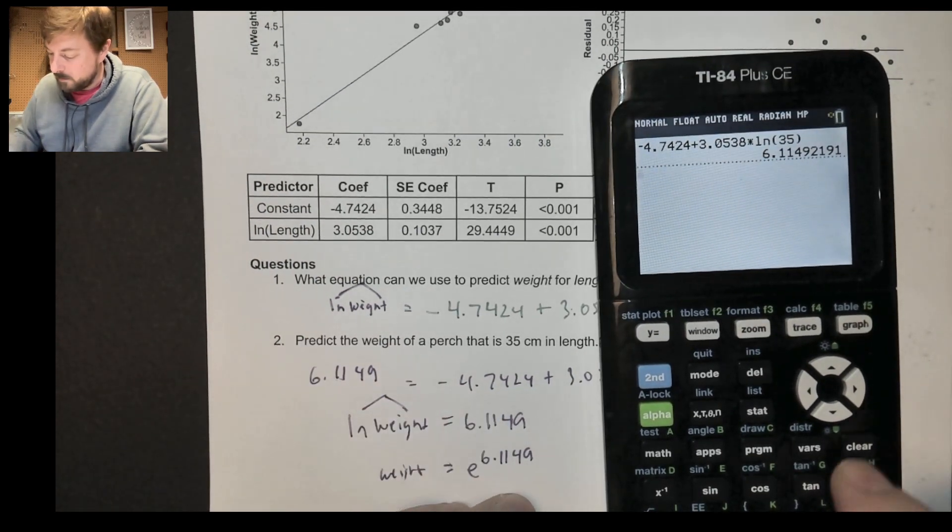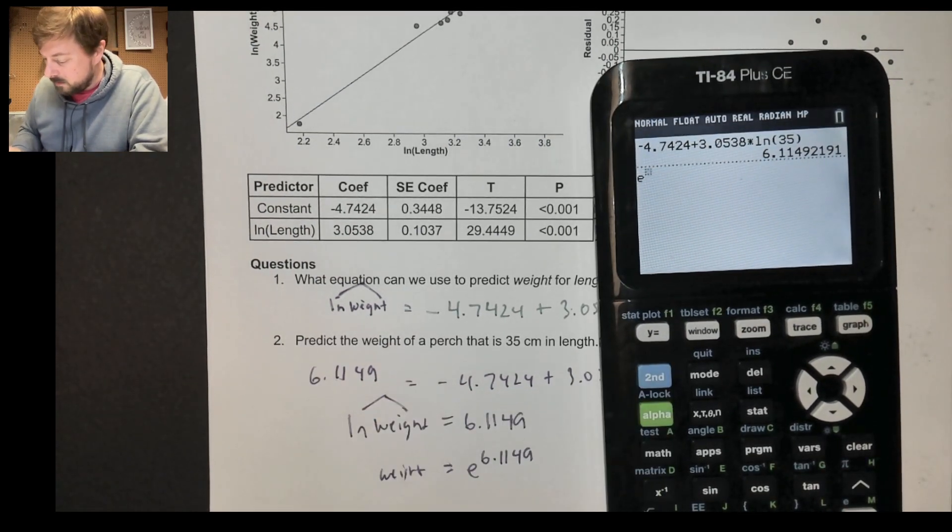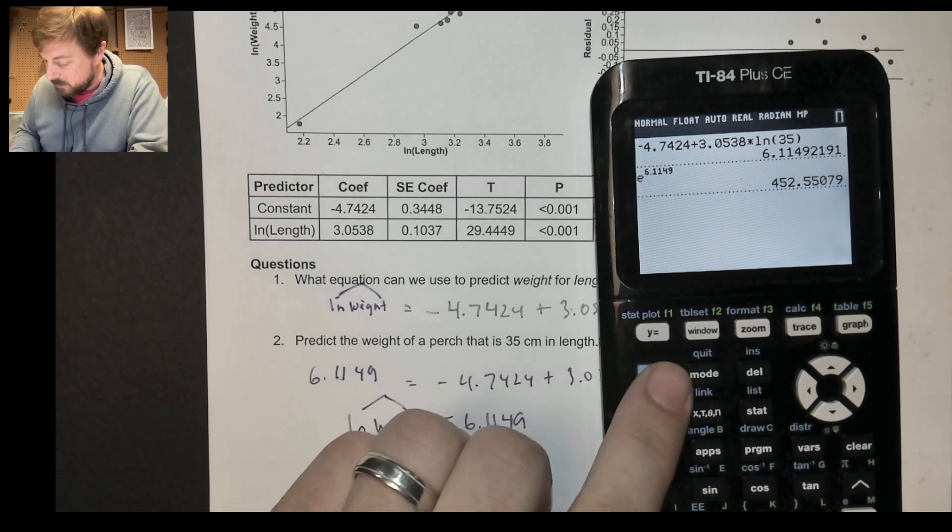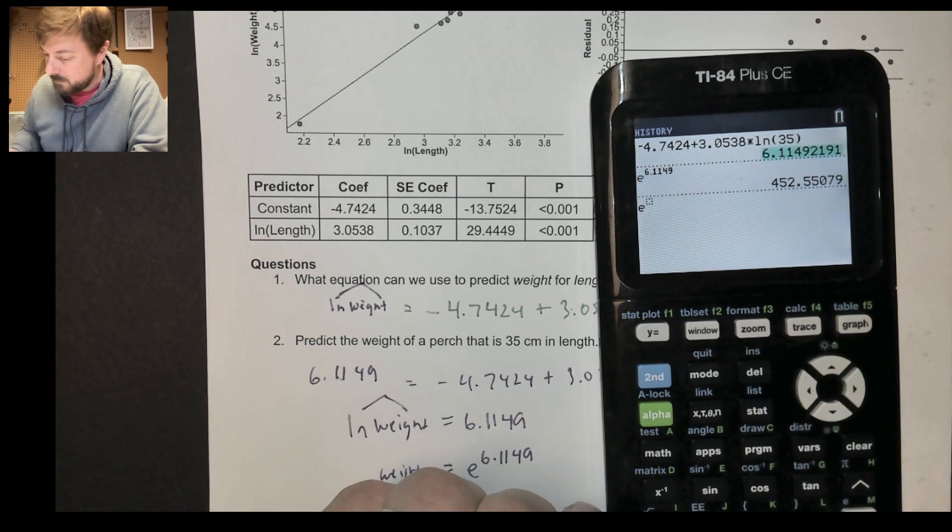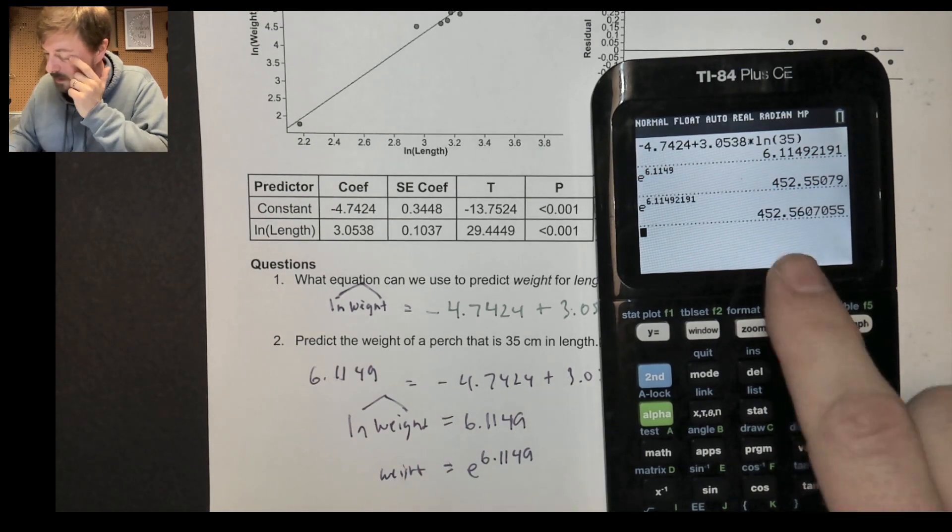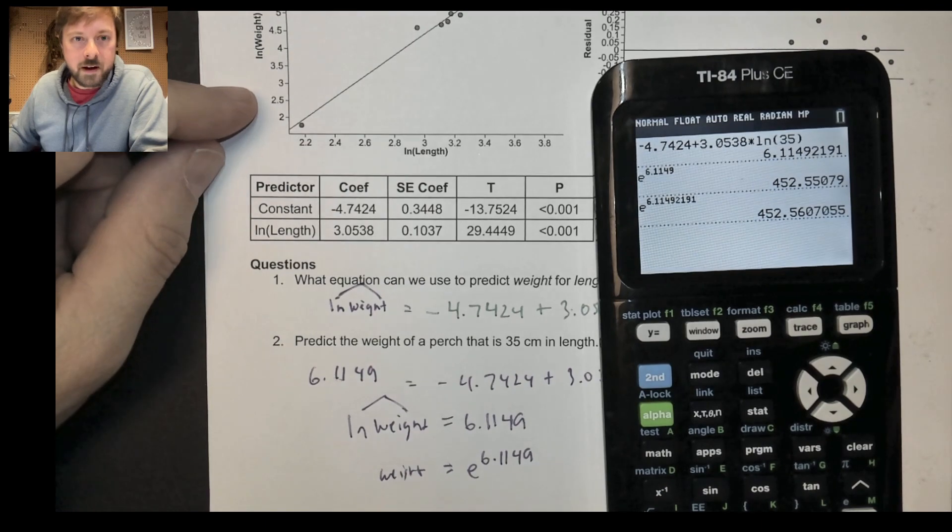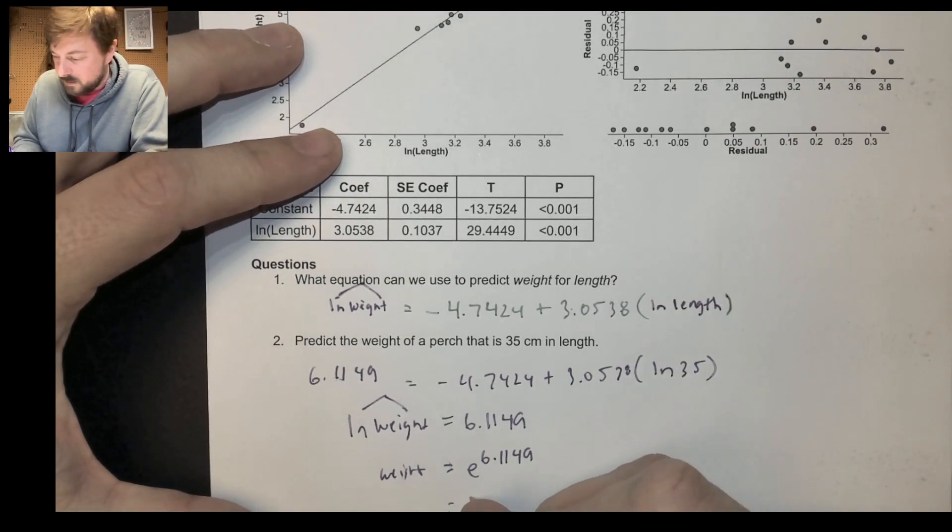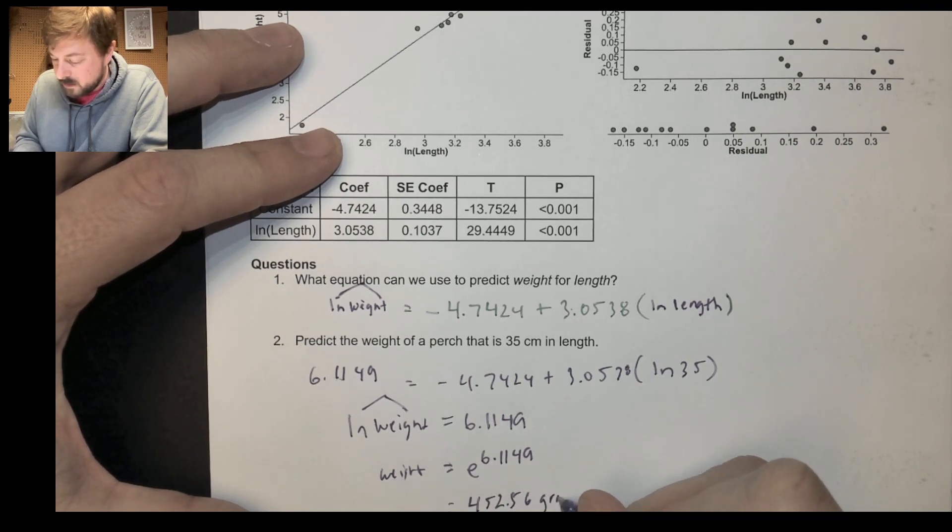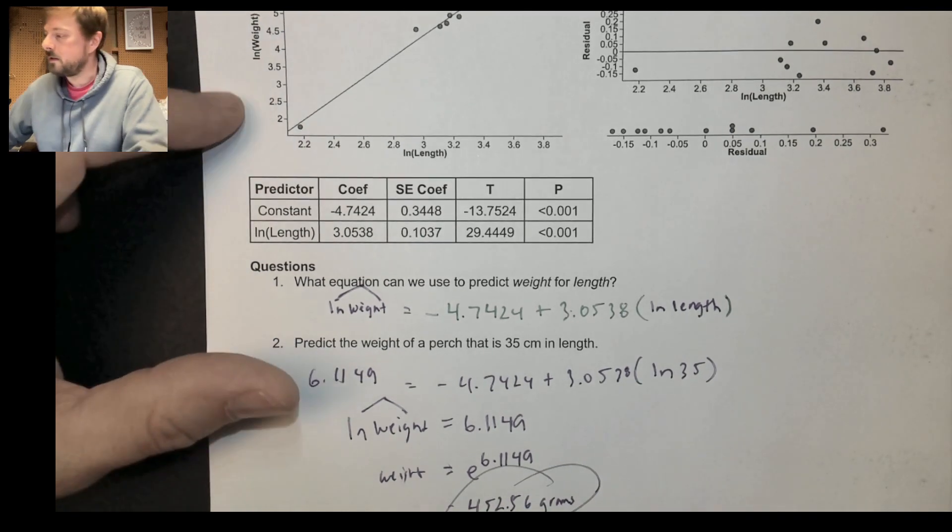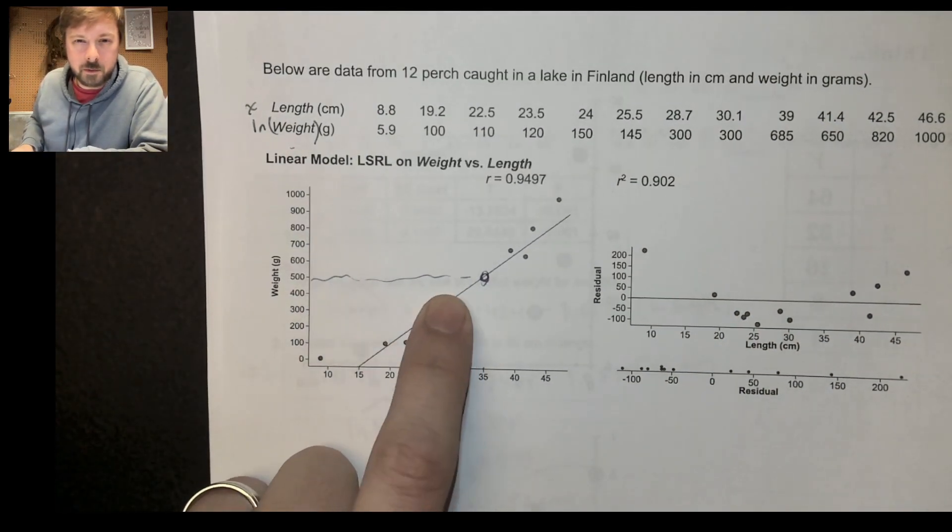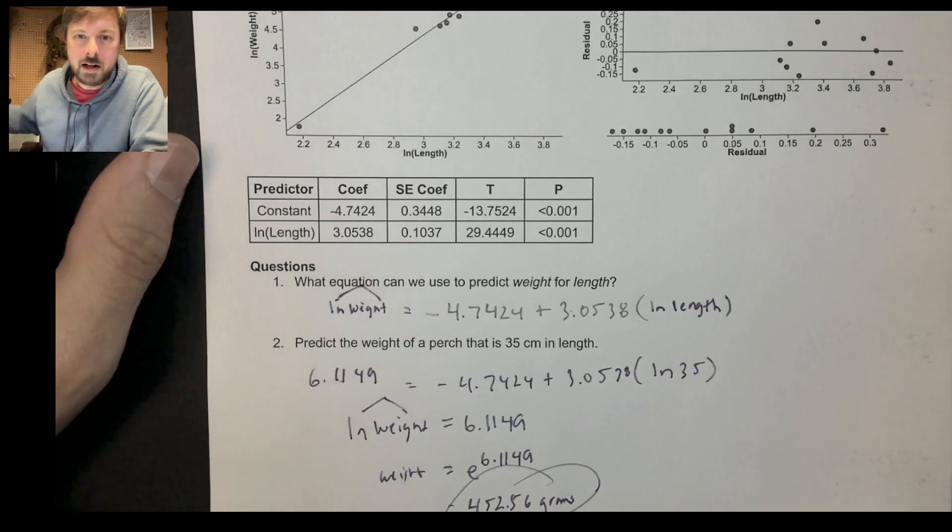To figure out what that is as a normal human number, I'll undo this by saying, well, then the weight should be E to the 6.1149, roughly speaking. So I'll go to my calculator and say, okay, Mr. Calculator, E to the 6.1149 power. I'm just going to copy and paste it just so there's less error. 452.56. What we predict is that this fish should be 452.56 grams. Is that consistent with just an eyeball? Yeah, it's kind of pretty close to what I was eyeballing there in our scatterplot.